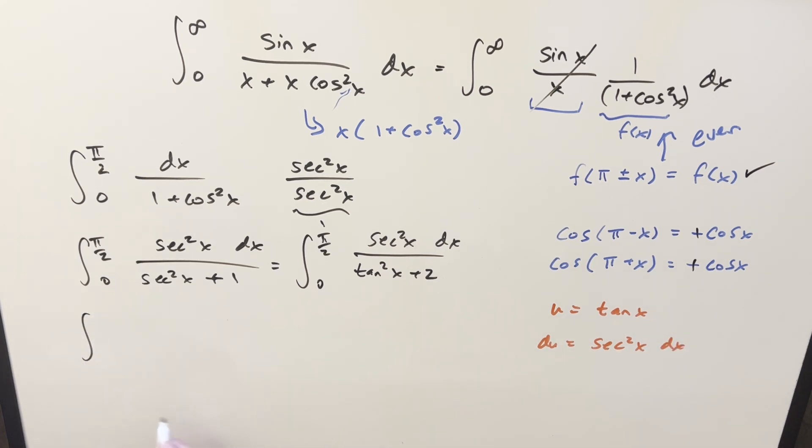Go ahead and substitute. Plug in pi over two, tan of pi over two is going to infinity. Plug in zero, tan of zero is just zero. All this stuff becomes just du up here, and then what we're left with here is u squared plus two.